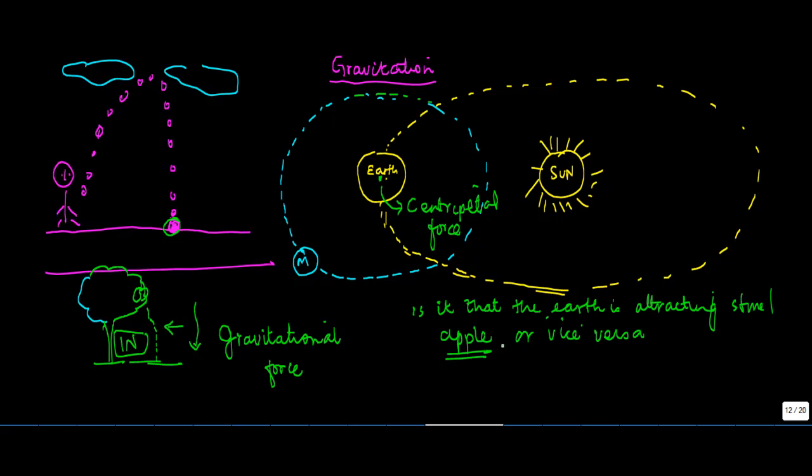So basically after studying all these things in detail, it was concluded that every object whether it be earth or apple attracts other objects towards itself. So when this apple is coming down, rather this apple as it falls attracts the earth towards it and the earth also attracts this apple.